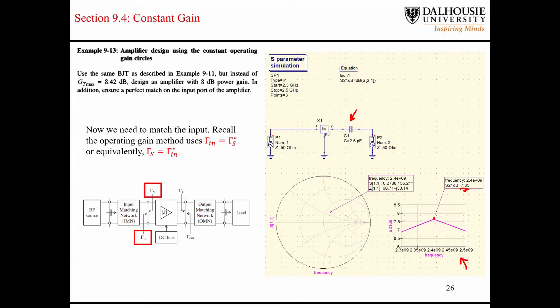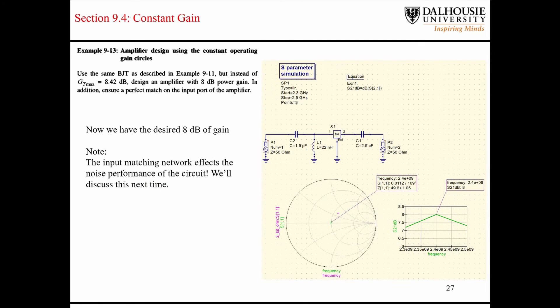And that's because, like we said, when I first introduced the operating gain method, the operating gain method assumes that there is a perfect match on the input here. So, now the next step of this design process is to design the input matching network such that the impedance seen looking into the input matching network is complex conjugate match to the input of the transistor. And you can see that over here. That's what I'm trying to illustrate here. So, if we perfectly match gamma S to gamma N, then that will be reflected in another S-parameter simulation.